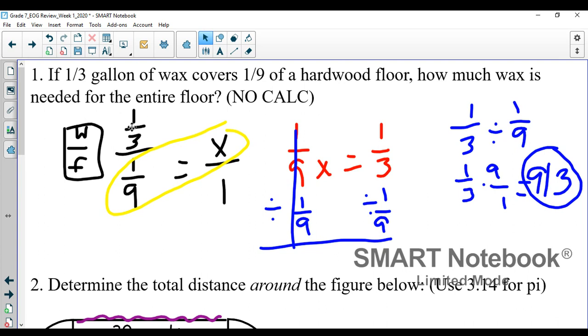I cross multiply: one-third times one is one-third, one-ninth times x is one-ninth x. Now I have a one-step equation. I need to divide each side by one-ninth, so in order to get my solution I actually have to do one-third divided by one-ninth, which I went ahead and did off to the side. So one-third, keep it, change the sign, flip it: nine over one is nine over three, or three. It would take three gallons of wax to cover the entire floor.